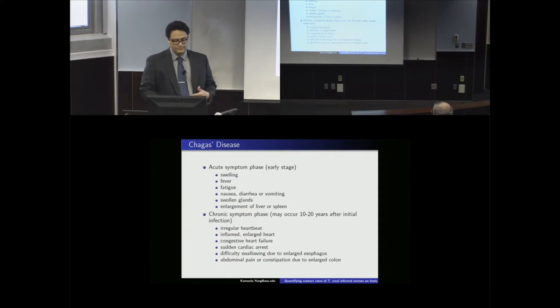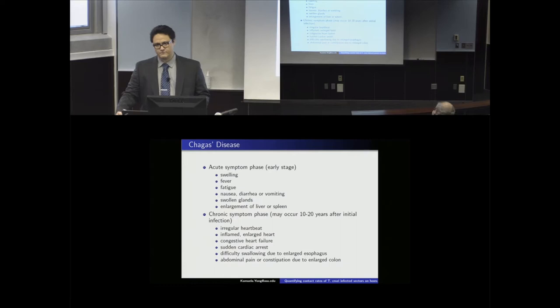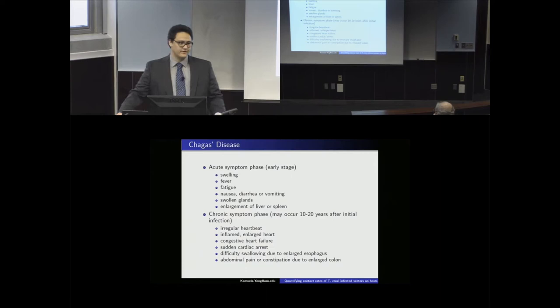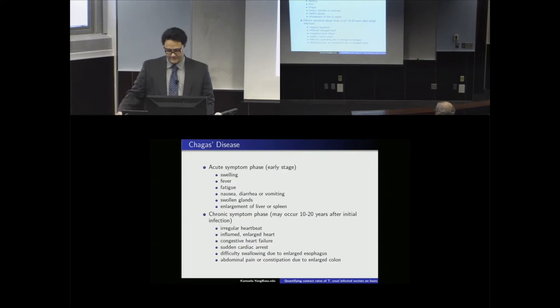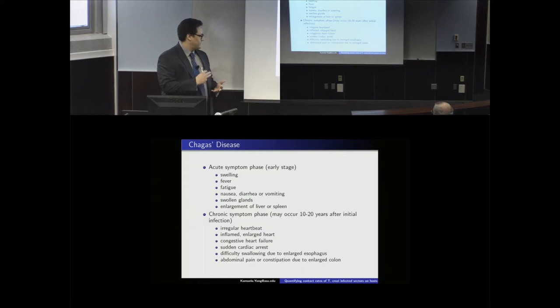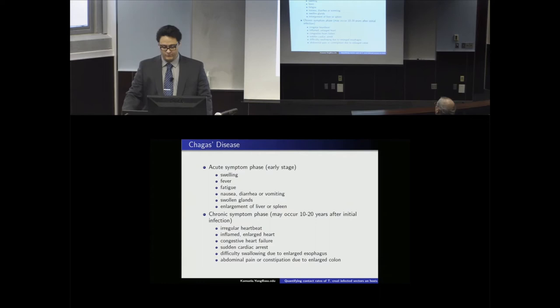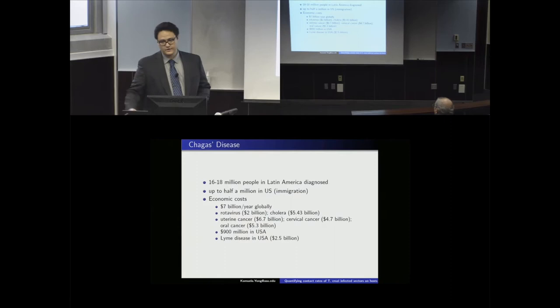Many of you might not be aware, but Chagas disease's first stage has only mild symptoms — swelling, fever, nausea, vomiting, swollen glands, or an enlarged liver or spleen. Some people won't even show symptoms in the acute phase. After the acute phase, you might go 10 to 20 years before showing symptoms of a more chronic phase, which can include irregular heartbeat, inflamed heart, and congestive heart failure — all while carrying the parasite without knowing it.